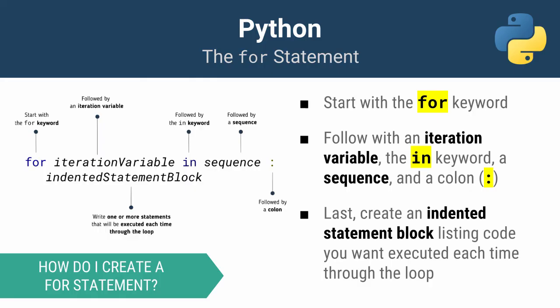Let's look at the anatomy of a for statement. You start with the for keyword followed by an iteration variable, then the in keyword, then the sequence you want to iterate through, followed by a colon. Then you need an indented statement block listing the statements you want to execute each time you go through the loop.